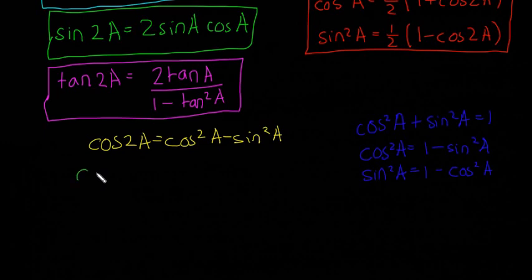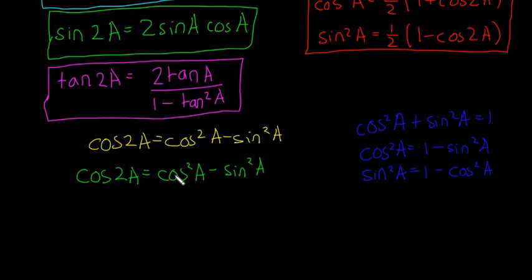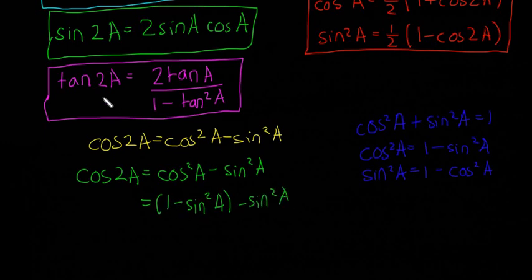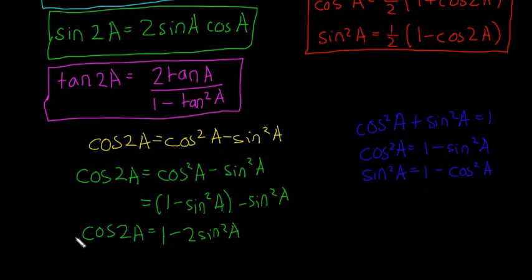Starting with the first derivation: cos 2a is equal to cos squared a minus sine squared a. I'm going to substitute cos squared a with 1 minus sine squared a. So instead of cos squared a, we write 1 minus sine squared a, giving us 1 minus sine squared a minus sine squared a. That simplifies to 1 minus 2 sine squared a. So another way of writing cos 2a is 1 minus 2 sine squared a.